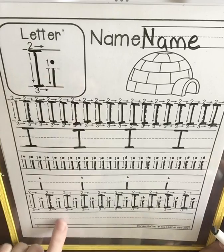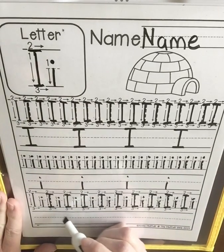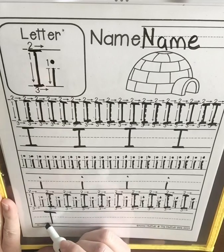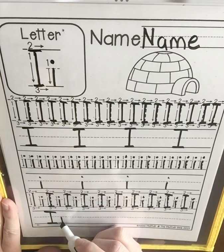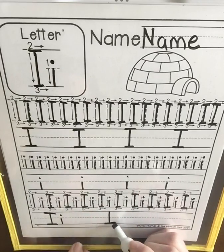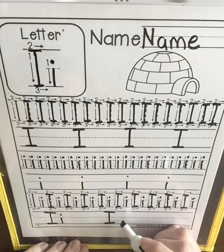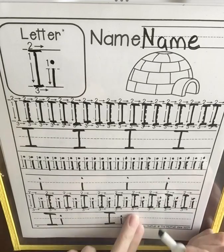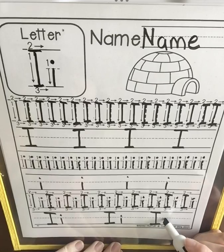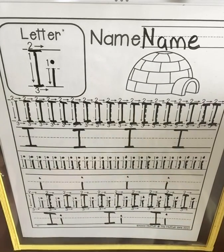And last, we'll do the pairs — we'll do three pairs. Capital I, lowercase i, two finger space, capital I, lowercase i, two finger space, capital I, lowercase i. And now that we're done, you can color the igloo. Great job, friends!